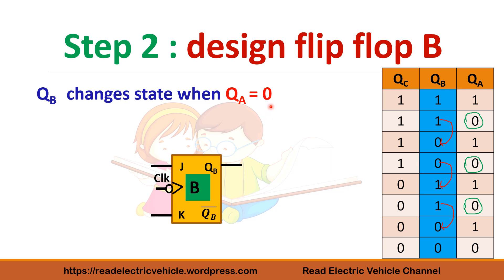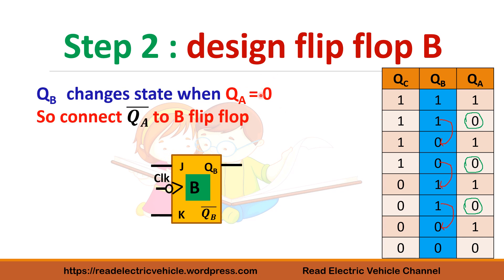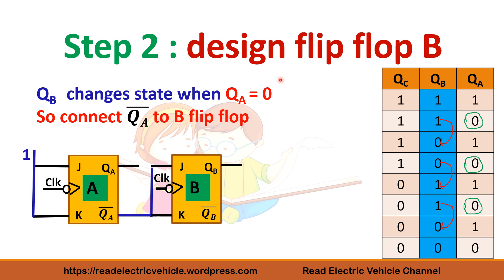In the up counter, the state change occurs when QA is 1. Here the key difference is it occurs when QA is 0. So instead of connecting QA to the JK flip-flop, we connect QA-bar, because when QA is 0, QA-bar will be 1. We connect QA-bar to J and K of the second flip-flop, so whenever QA-bar is high, flip-flop B will toggle.